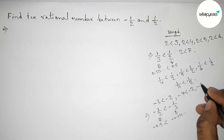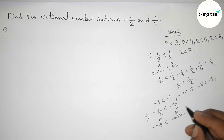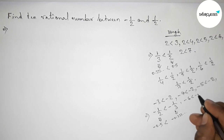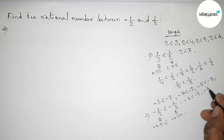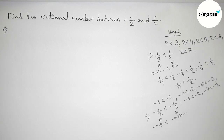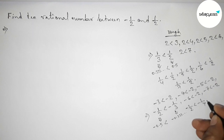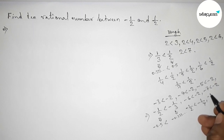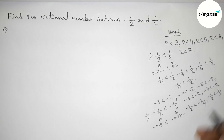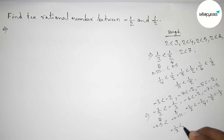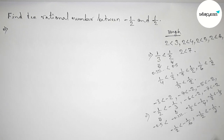Similarly taking minus 4 less than minus 2, then minus 5 less than minus 2, then minus 6 less than minus 2, and minus 7 less than minus 2. For all these cases we can write: minus 1 by 2 less than minus 1 by 4, minus 1 by 2 less than minus 1 by 5, minus 1 by 2 less than minus 1 by 6, minus 1 by 2 less than minus 1 by 7.